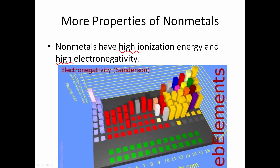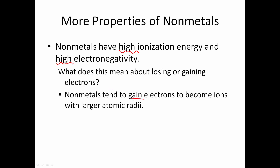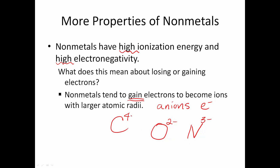Remember, low ionization energy means you lose electrons easily. So high ionization energy means that nonmetals tend to gain electrons, to become ions with larger atomic radii. That means they are becoming anions — gaining electrons. For example, you might have oxygen with a negative two charge, nitrogen with a negative three charge, or carbon with a negative four charge. They are gaining electrons, which means they're going to become bigger.